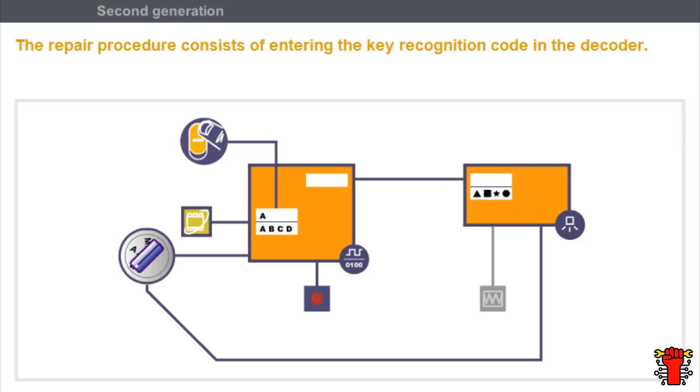The repair procedure consists of entering the key recognition code in the decoder. The decoder then enters inactive immobilizer mode. When the ignition is switched on, the decoder transmits the coded frame to the injection system, thereby authorizing the engine to start.